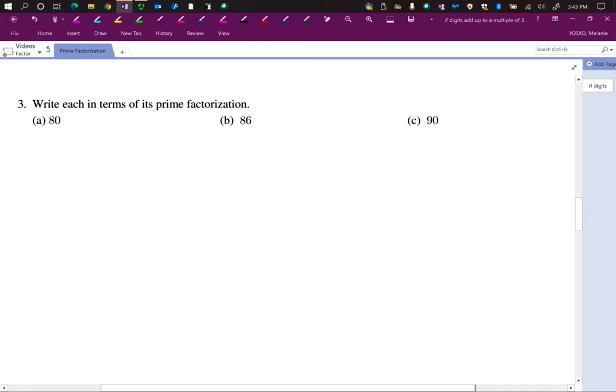Write in terms of the prime factorization. Remember we have two different types of numbers: prime numbers and composite numbers. Prime numbers have only the factor 1 and the number itself. A composite number has more than two factors.